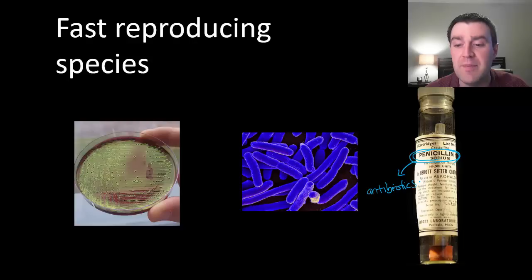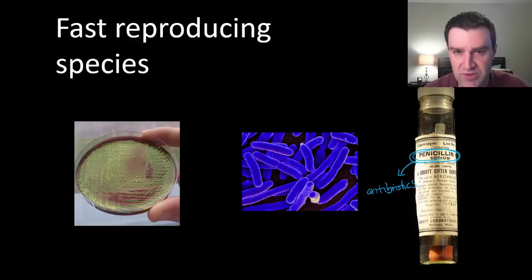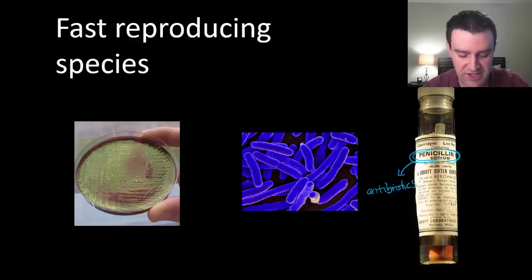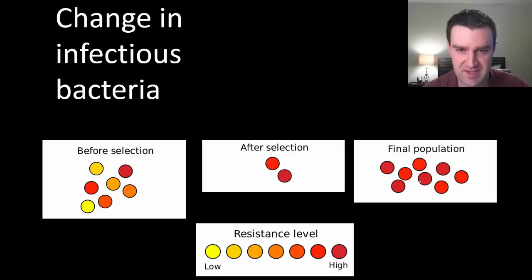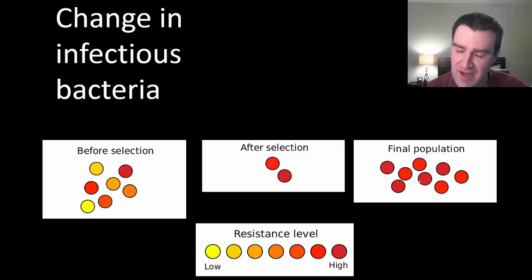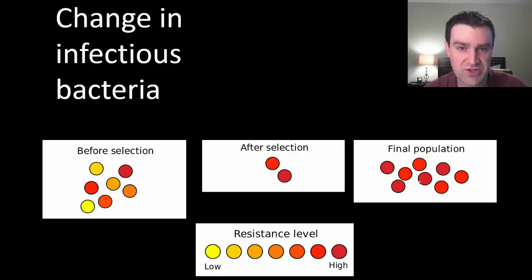Very successful drugs at first, but as time progressed we started to see pathogenic bacteria — bacteria that cause disease — become more and more resistant to the medications we used to be able to give. This resistance to our medications is something Darwin could have very easily predicted from his ideas of how change works. Hospitals, doctors, and nurses have seen bacterial disease become harder and harder to treat, and we've had to switch to new types of antibiotics.